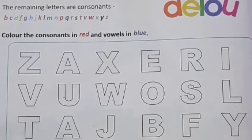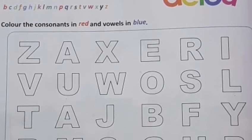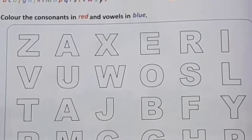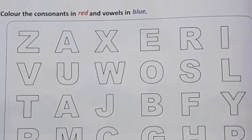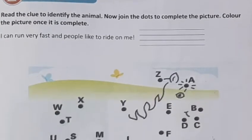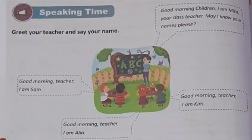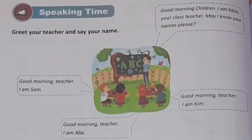Vowels are A, E, I, O, U. The remaining letters are consonants. The exercise given is: color the consonants in red and vowels in blue. Children, we will do this exercise in class, and page number 9 as well. Now I'm moving to page number 10.